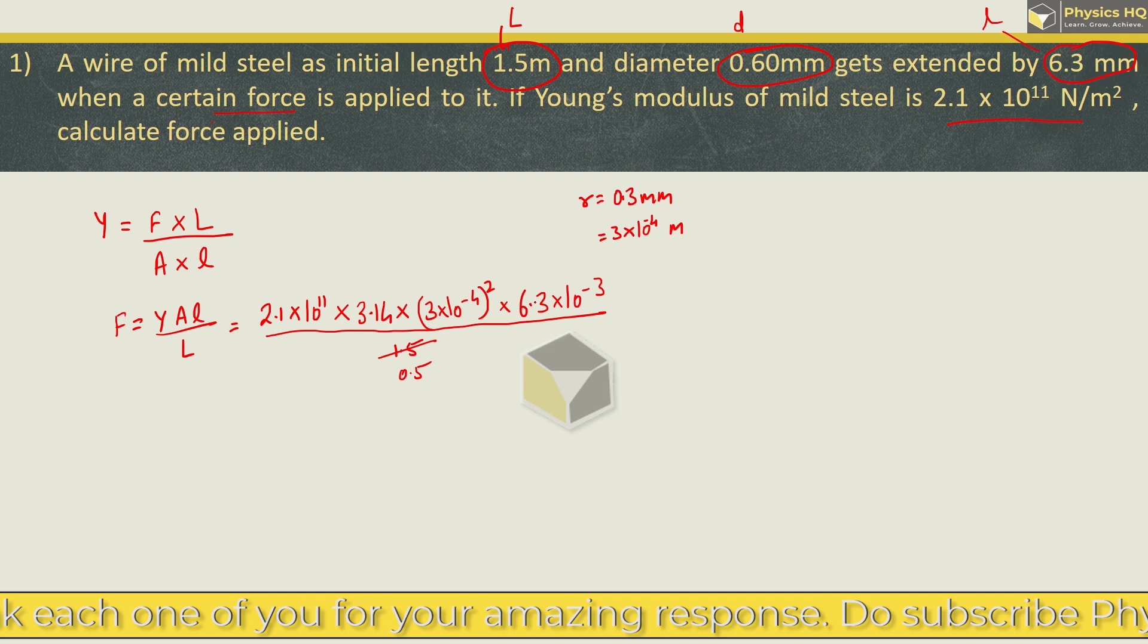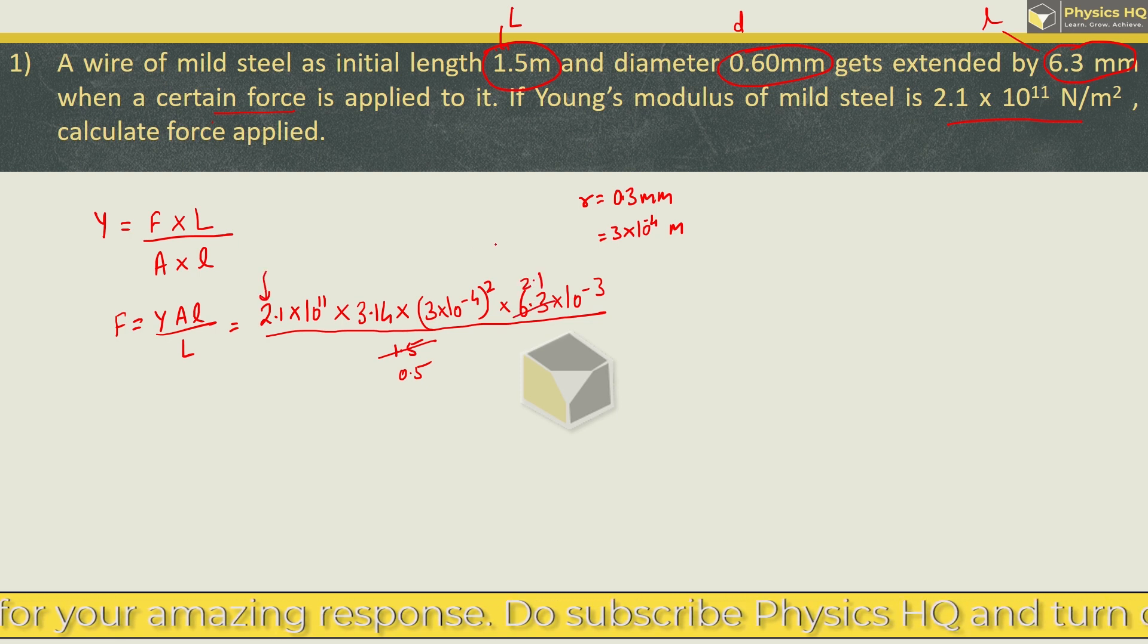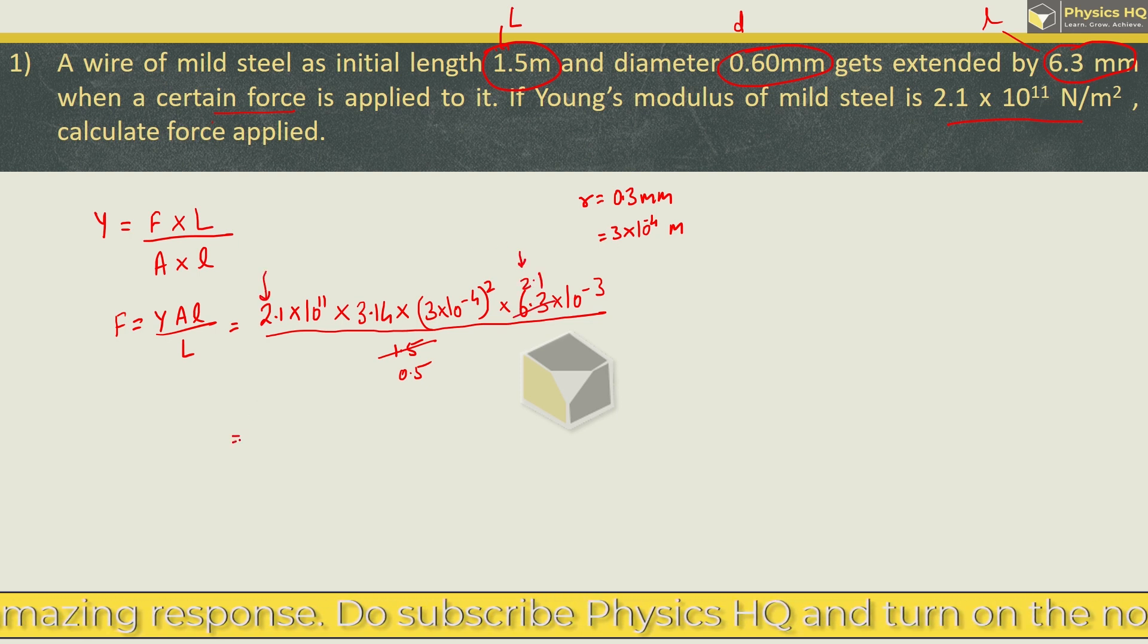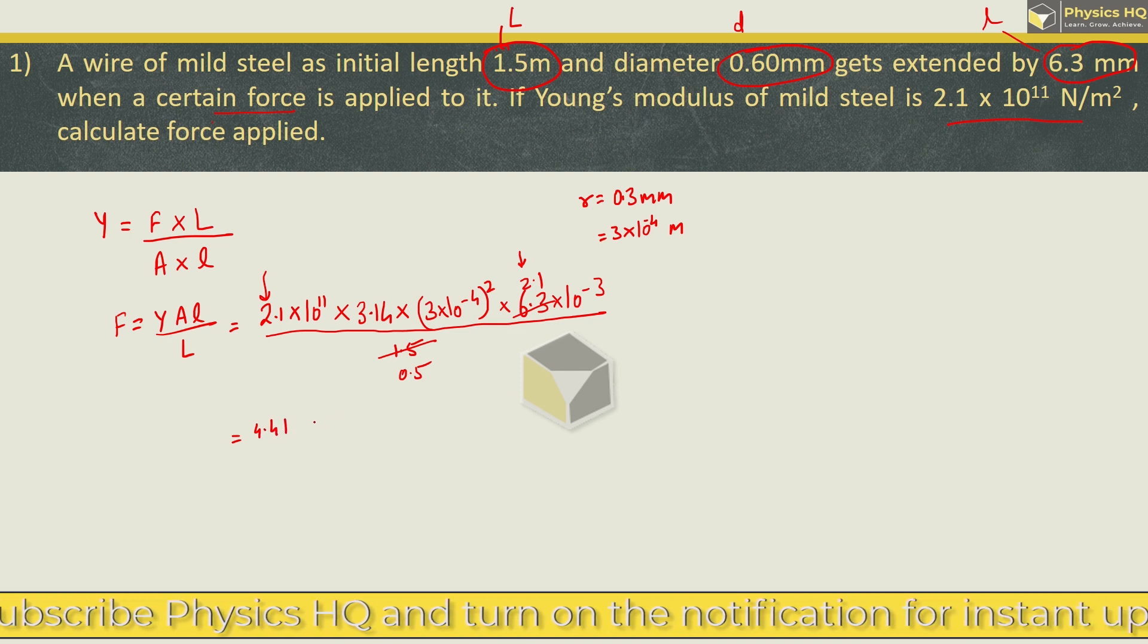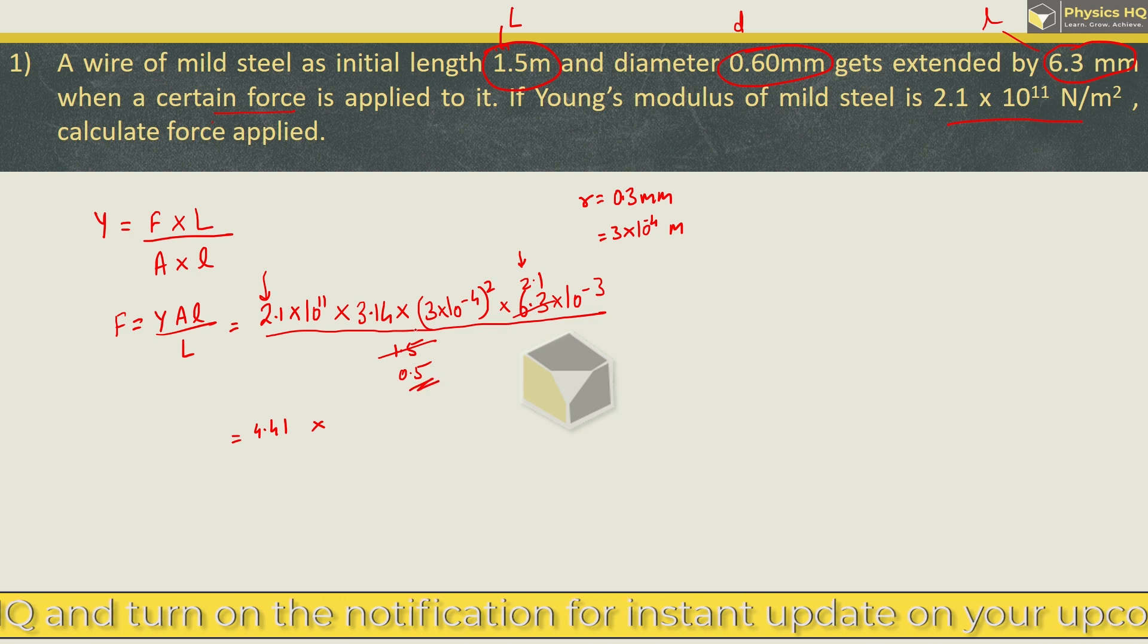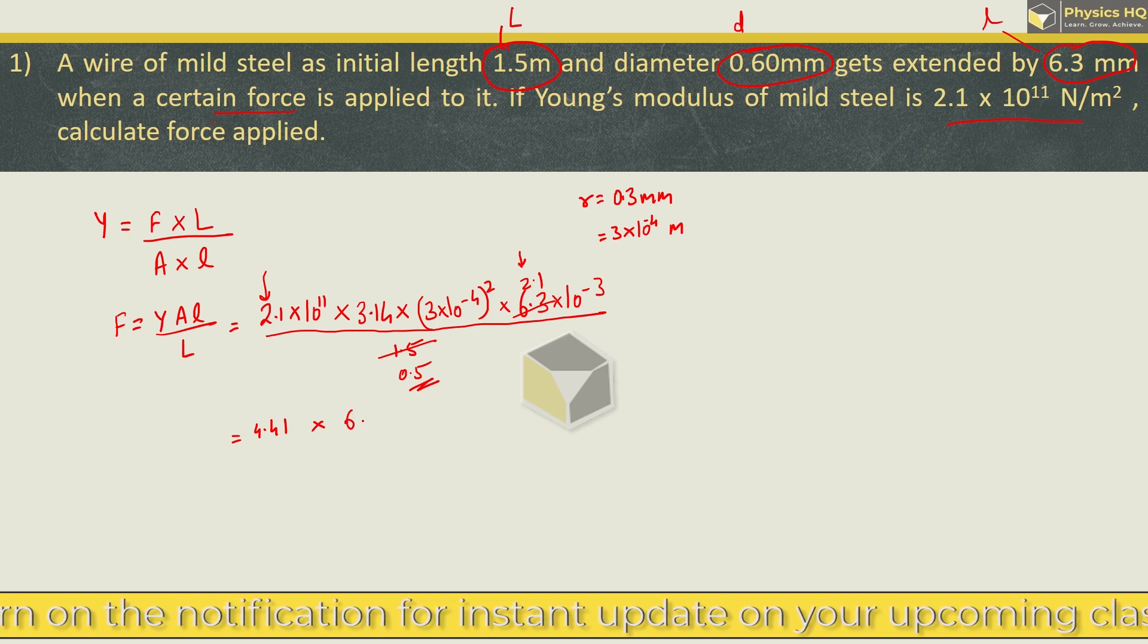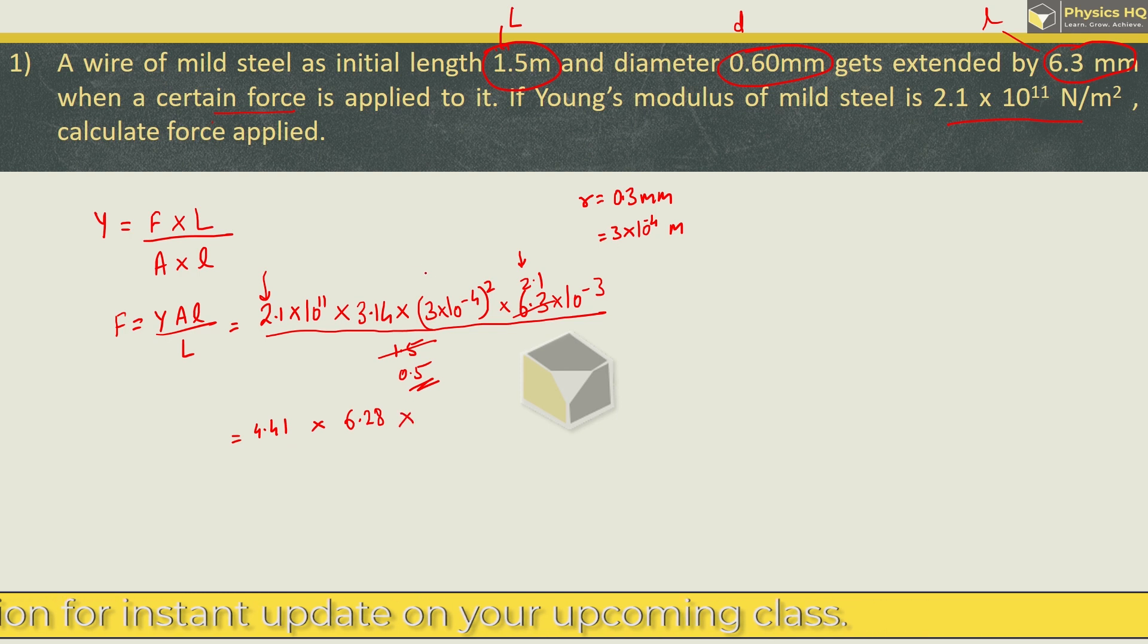We can divide this by 3, so this becomes 0.5, which is 2.1. And this square will be 4.41—21 squared is 441. This 0.5 is 1/2, so 2 goes up. We got 3.14 × 2 which is 6.28 × 3² which is 9, times powers of 10.